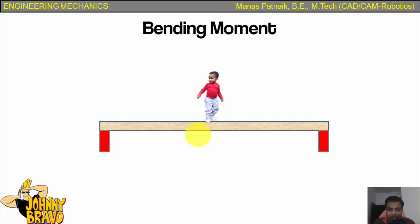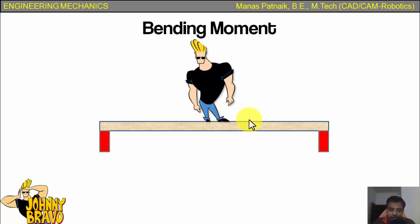Therefore, the bending moment due to the child is being resisted by the plank. However, if the bulky Johnny Bravo stood on the plank, it may break at the center. This is due to the bending moment being too great for the plank to resist. That is the physical significance of bending moment.